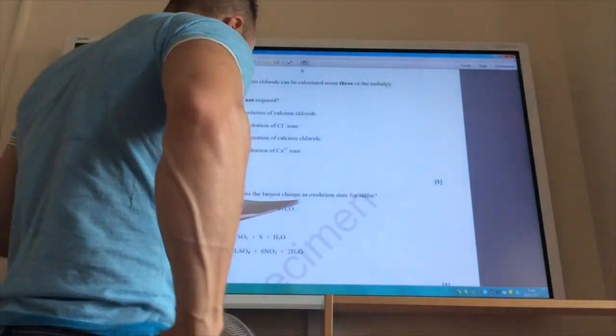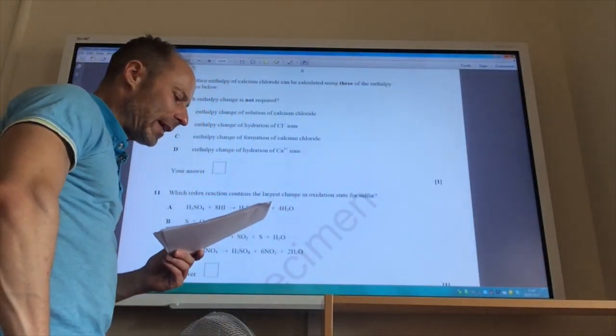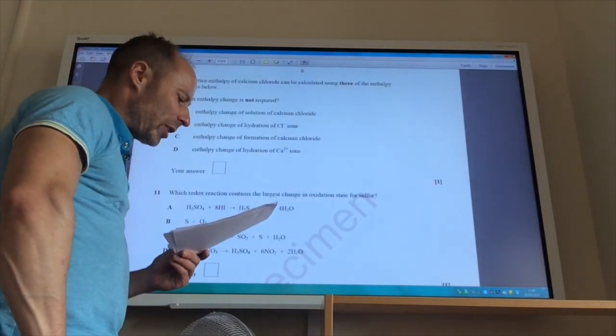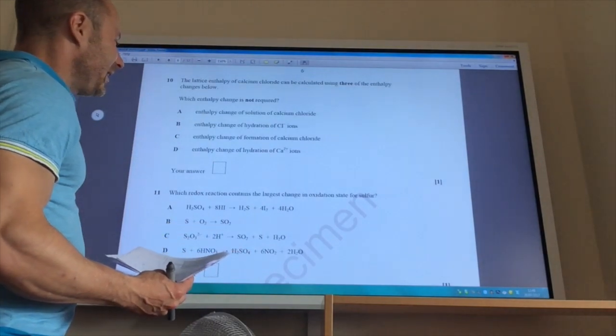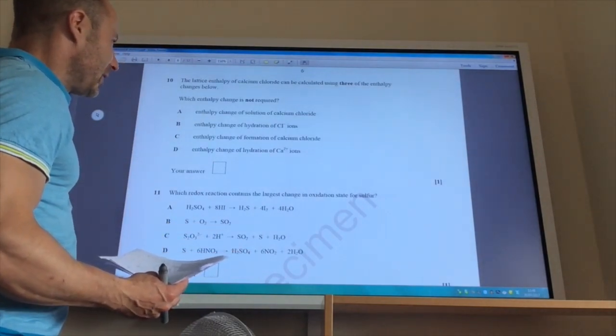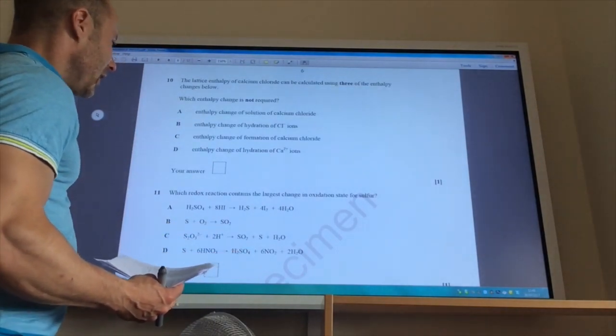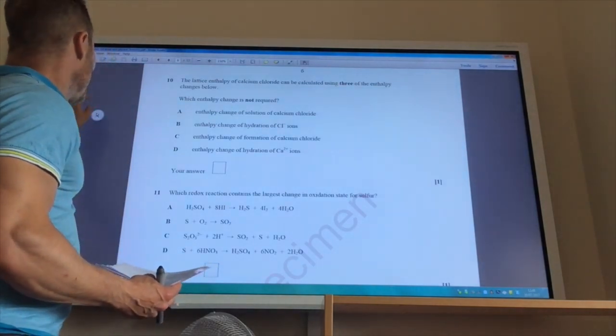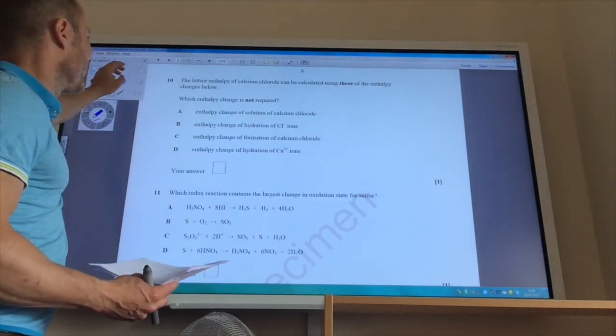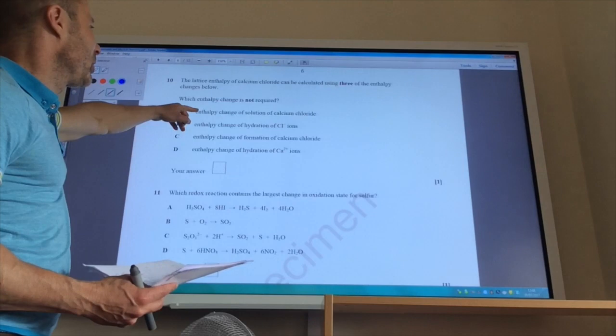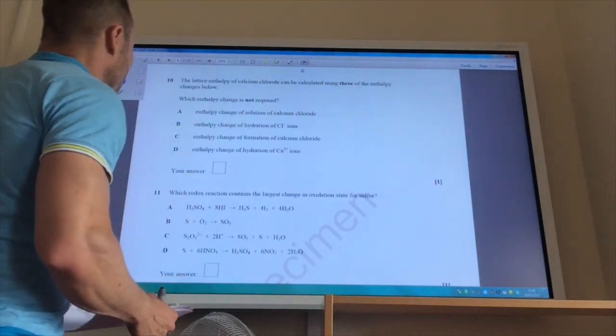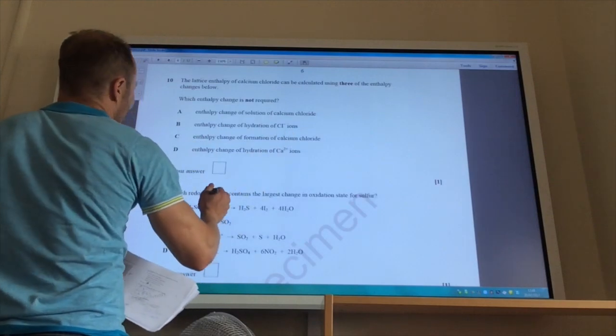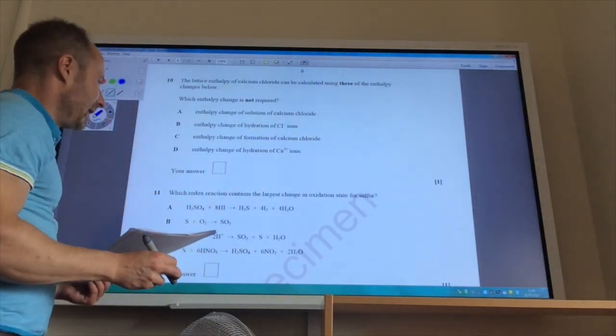The lattice enthalpy of calcium chloride can be calculated using three of the change below. Which one don't we need? This is going to use it based on solution data. So in order to do that one, you need to know the change, entropy of solution and the hydration of the two ions. The one you don't need is the entropy change of formation of calcium chloride, which is C.